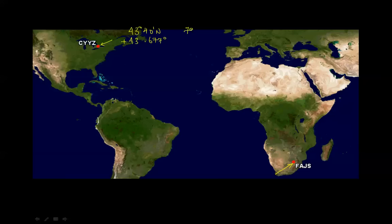Johannesburg is located at 26 degrees 8 minutes south, which we can write as -26.133 degrees, and it is at 28 degrees 14 minutes east, which we can write as +28.242 degrees. I'll rewrite that here.